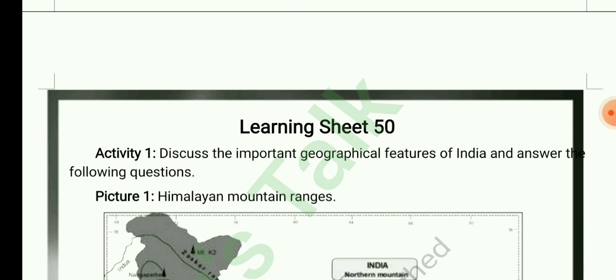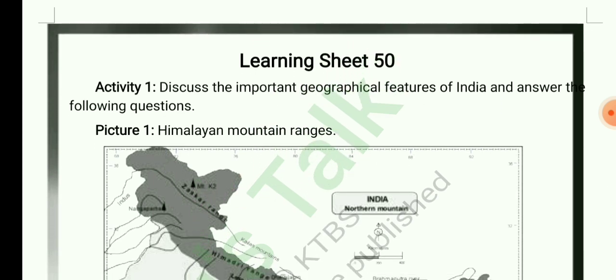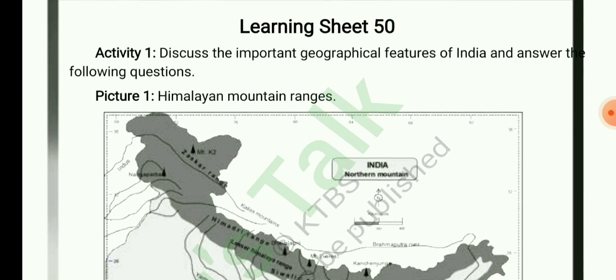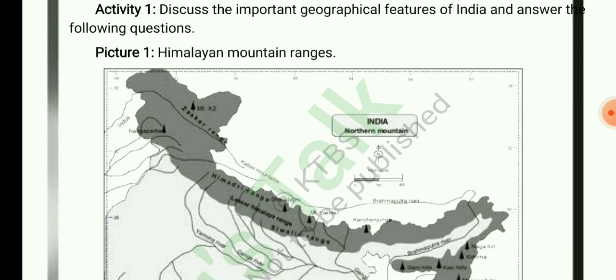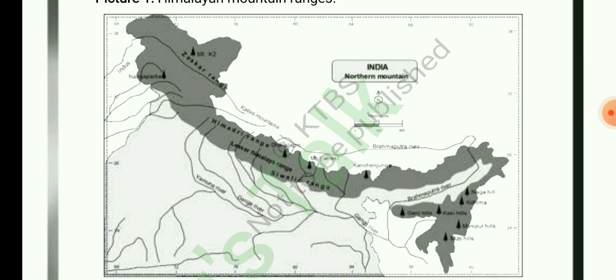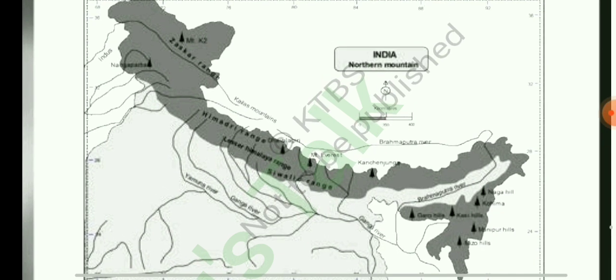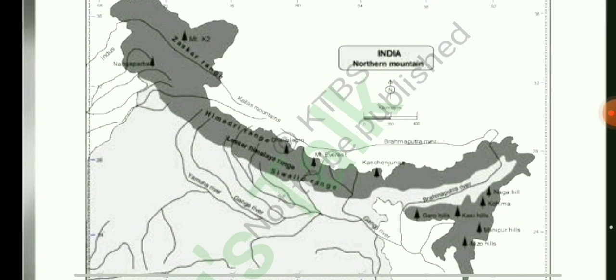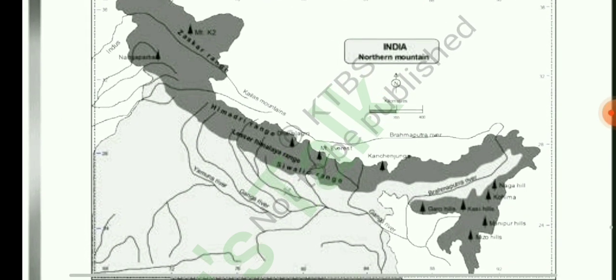Learning Sheet 50: discuss the important geographical features of India and answer the following questions. Picture 1 shows the Himalayan Mountain Ranges. The Himalayas consist of 3 parallel ranges: Greater Himalayas, Lesser Himalayas, and Siwalik Hills.